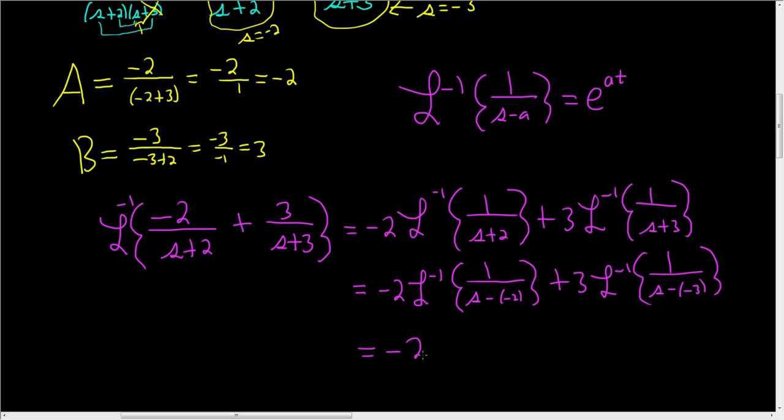So this is negative 2. And then here a is negative 2, right? That's our a. So we're going to get e to the negative 2 t. And that's it. That's the inverse Laplace transform.